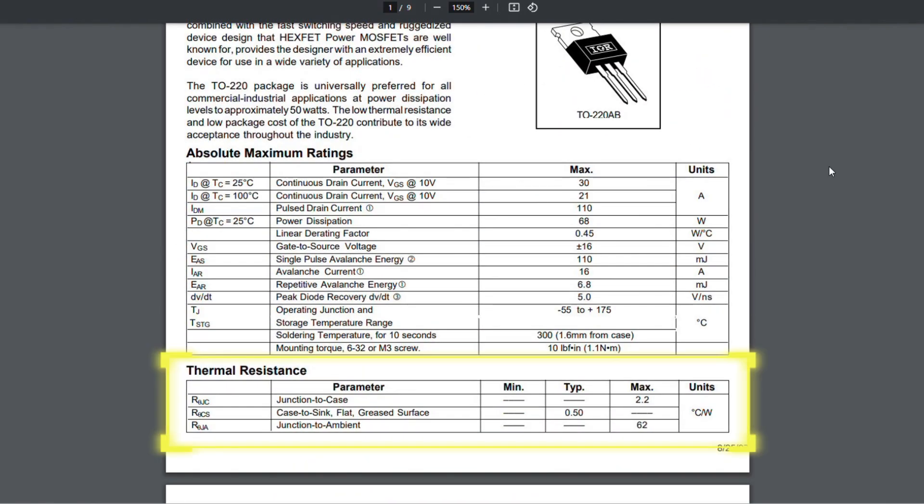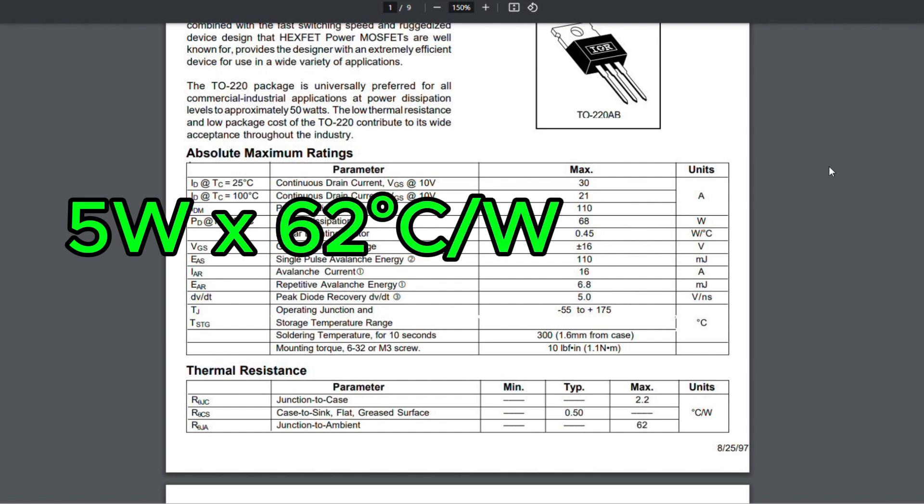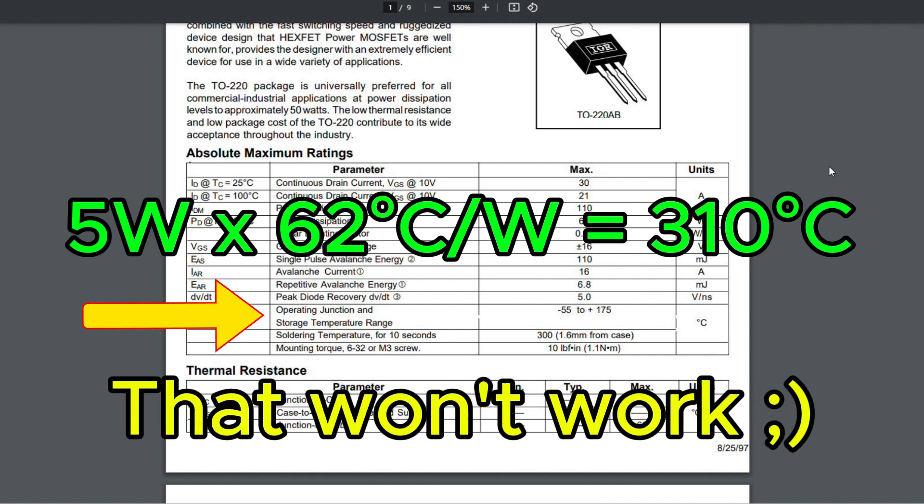It becomes clear if you look at thermal characteristics. There you should find junction to ambient parameter. It specifies how much the temperature will raise per watt of heat when transistor works in the open air without additional measures. So we just need to multiply the 5 watts we estimated already by junction to ambient parameter to immediately figure out that it's way too much for the transistor to work continuously under such conditions.